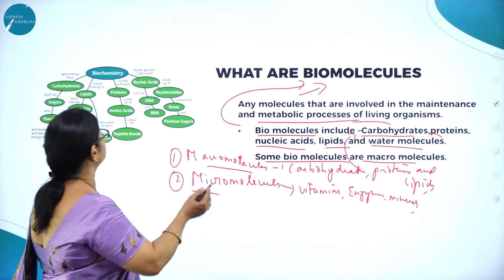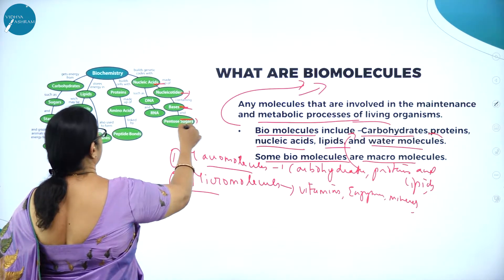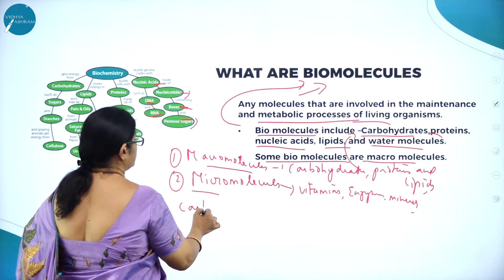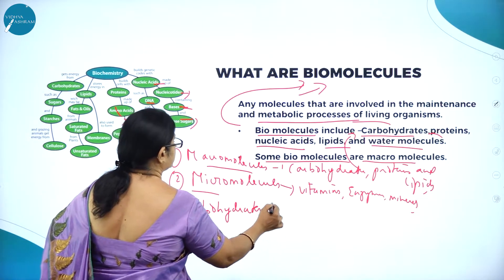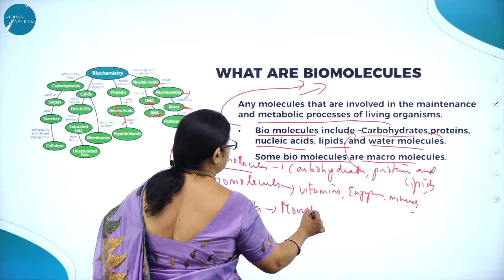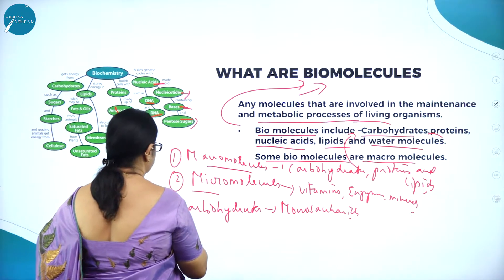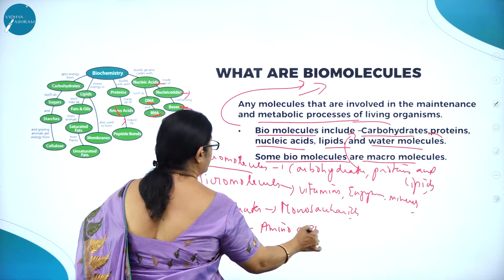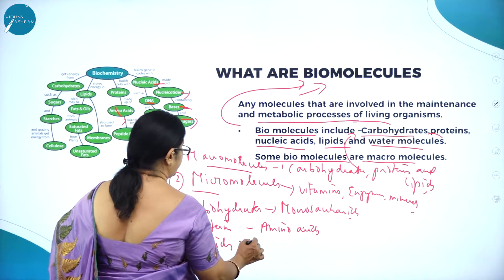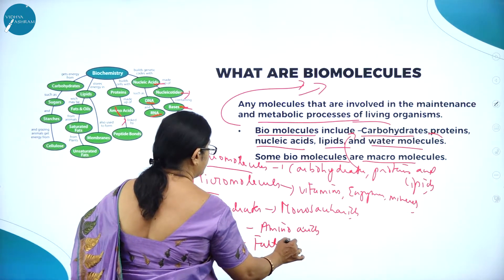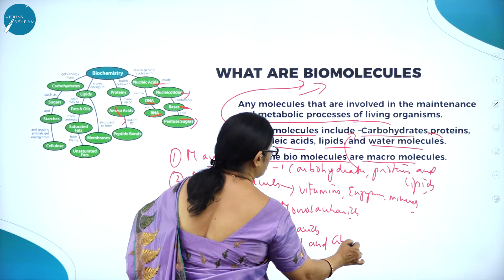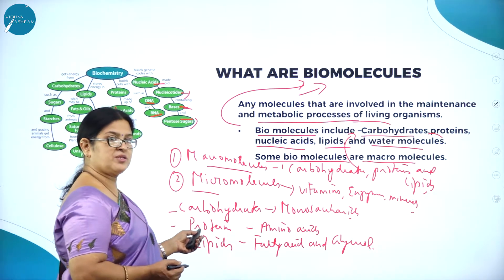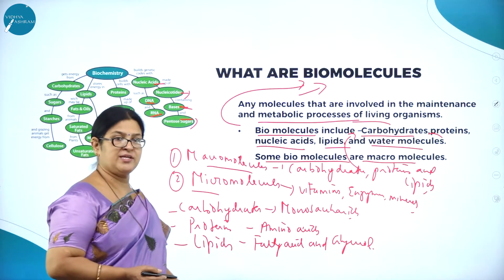Here you can see the different biomolecules. Nucleic acids are made up of nucleotides — bases and pentose sugars — forming DNA and RNA. The building blocks of carbohydrates are monosaccharides. The building blocks of proteins are amino acids. The building blocks of lipids are fatty acids and glycerol.